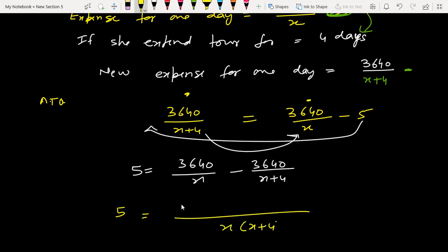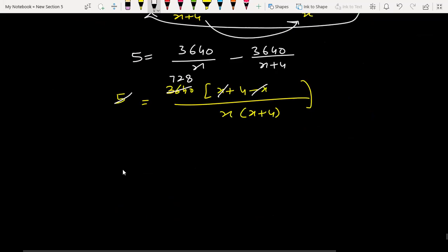Quadratic equation here. We can make 3640 common. x squared plus 4x, 4 multiply by 728. This is the quadratic equation.